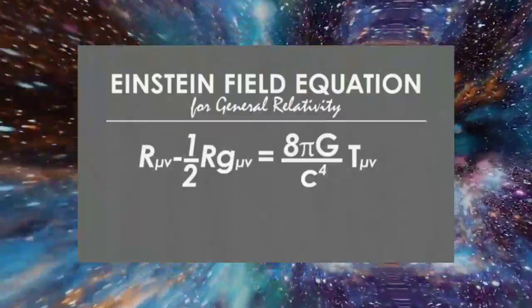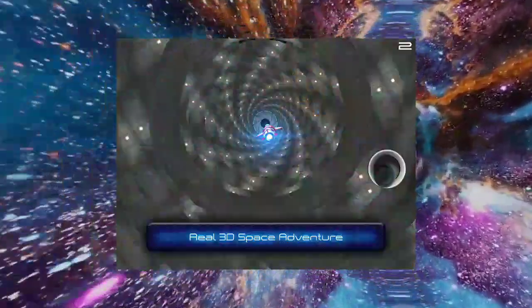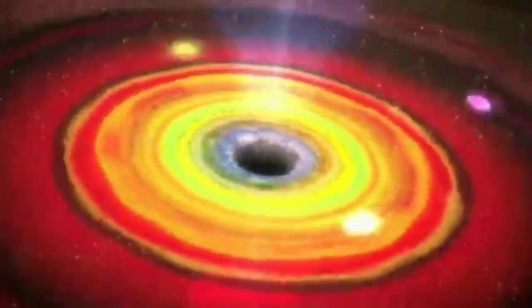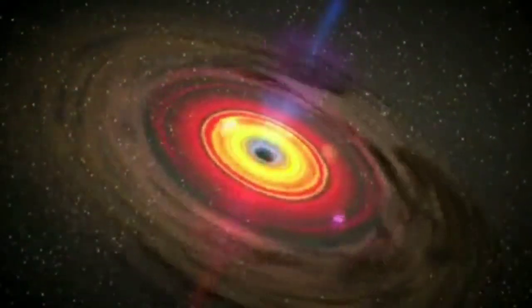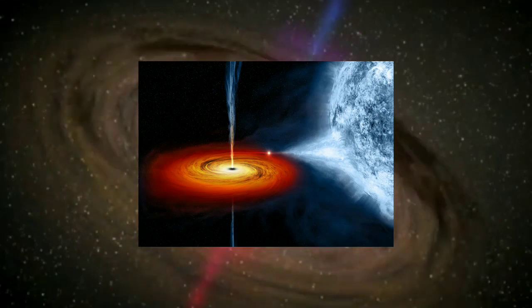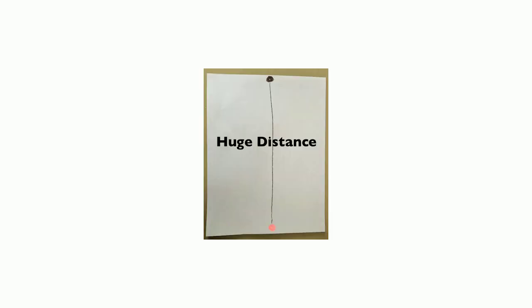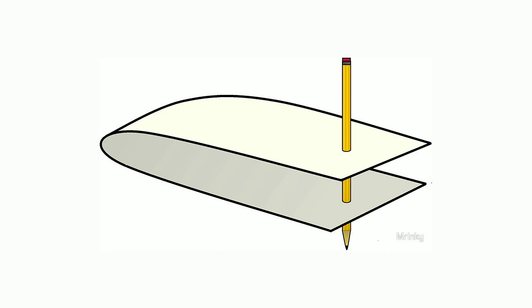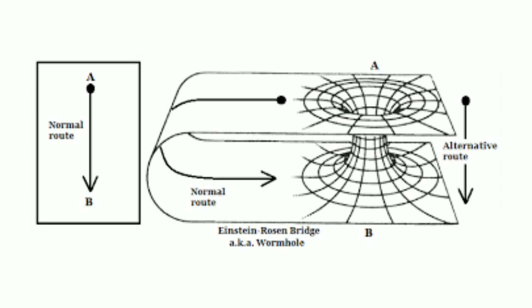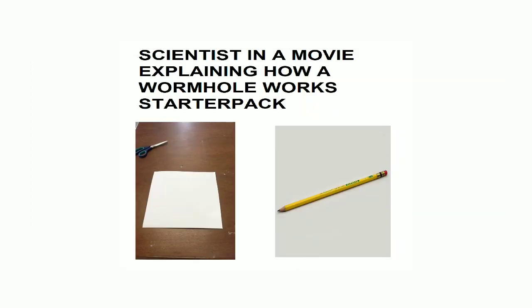Wormholes are spatial solutions of Albert Einstein's field equations. If you want to visualize it, you can think of an eternal tunnel in three-dimensional space going forward without any opening at the other end. Most importantly, they are consistent with the general theory of relativity. To visualize how a black hole works and how a wormhole is related, you can take a piece of paper — a strip — and mark two points on it.